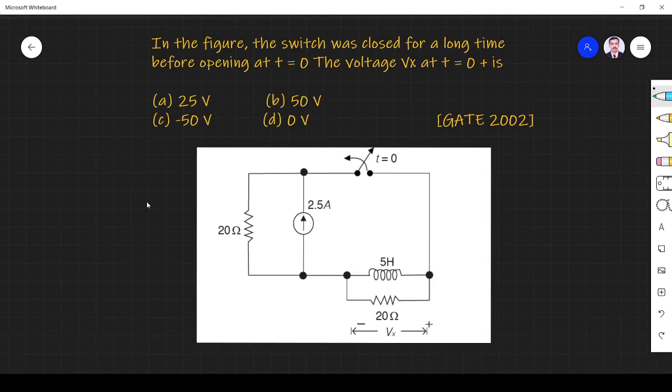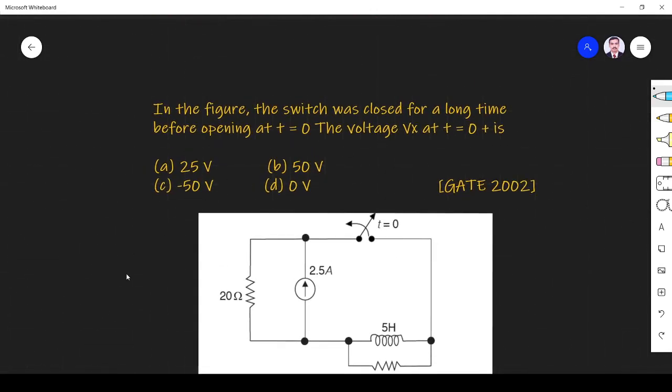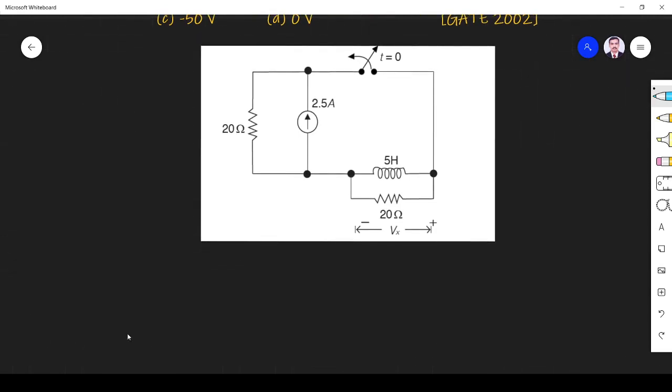So what they are telling is the switch was closed for long time and opened at t equals 0. So at t equals 0 minus the switch was closed for long time. Okay, so the diagram is like this. The switch was closed for long time.